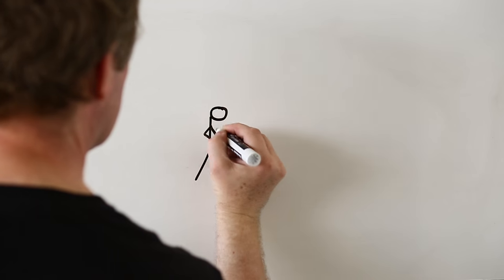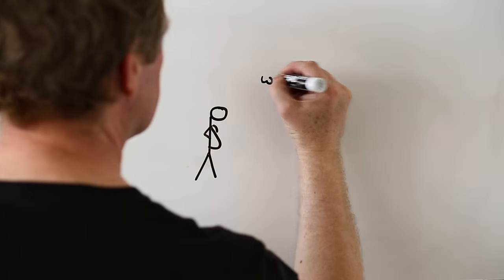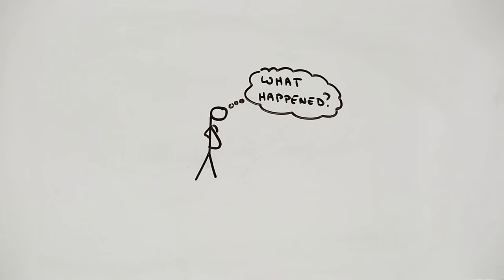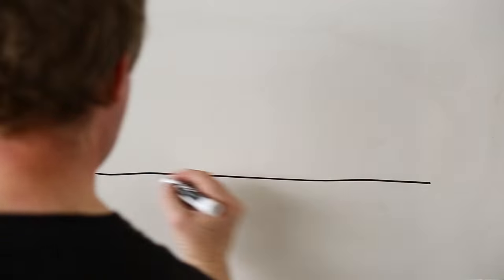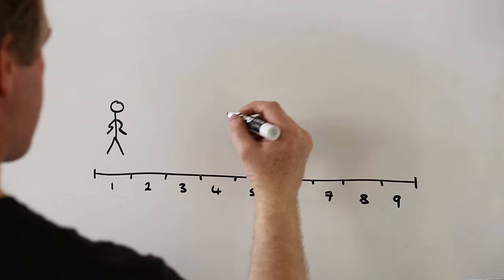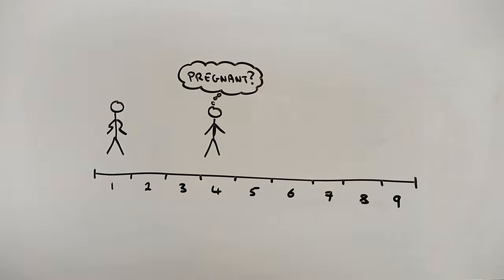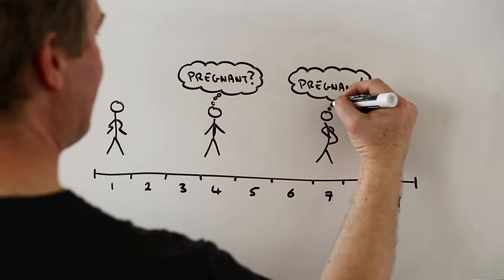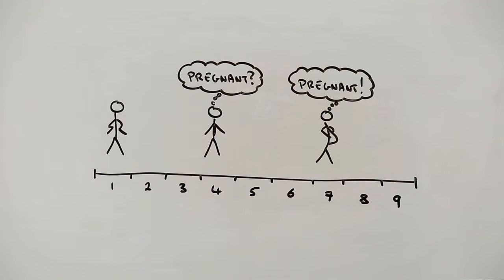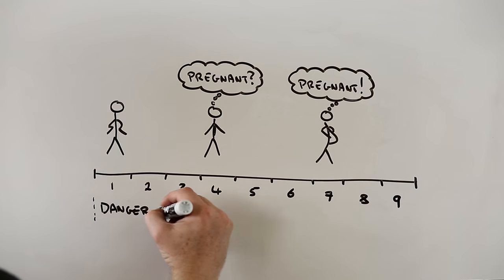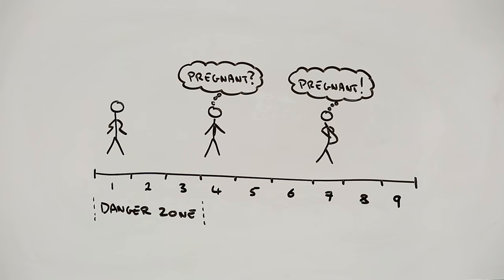This becomes even more important amongst teenage girls where the majority of pregnancies are unplanned. Part of the problem is that if you're not planning to get pregnant, there's a reasonable chance that you won't even realize you're pregnant for the first two or three months. Yet these months are when your child is most vulnerable to factors that can affect brain development, including possibly Zika.